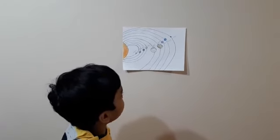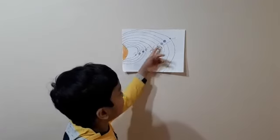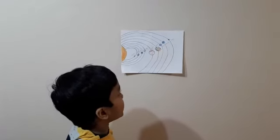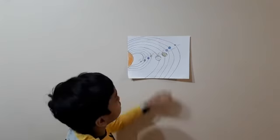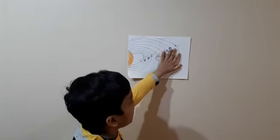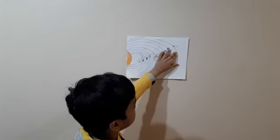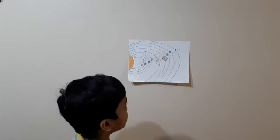Uranus is made out of gases. Neptune is made out of blue clouds and hydrogen. And Pluto is the last planet from the sun.